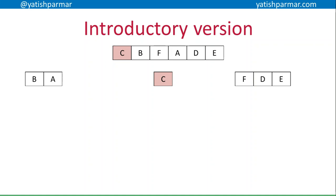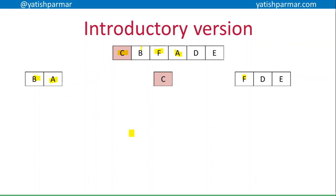I've got my list at the top: C, B, F, A, D, E. The first element in the list, which is C, is going to be my pivot. Once I've got my pivot I want to flip all the items that are smallest to the left of the pivot and everything larger to the right. So B is smaller than the pivot — goes into the left list. F is larger — goes into the right list. A is smaller — goes into the left list, and so on.